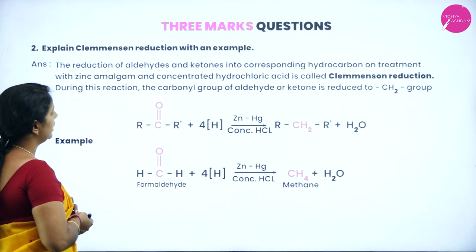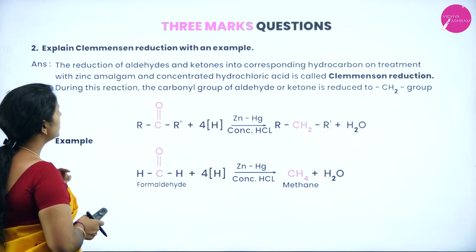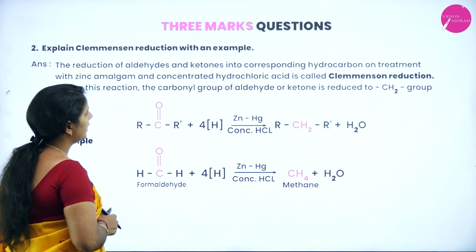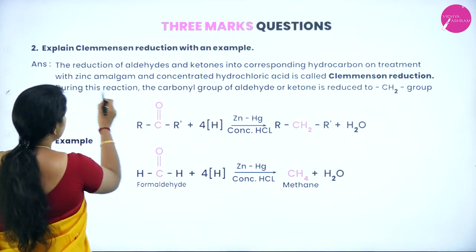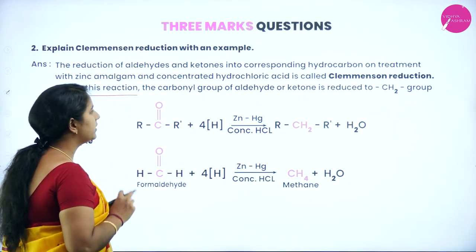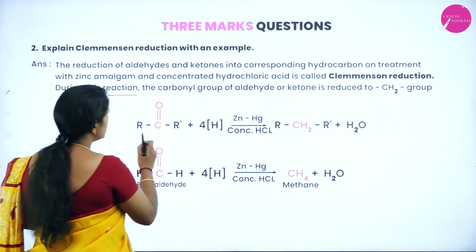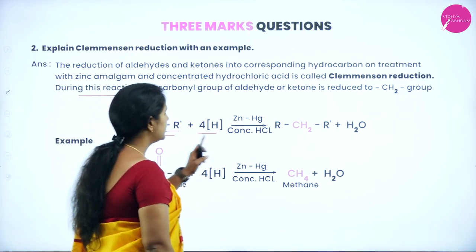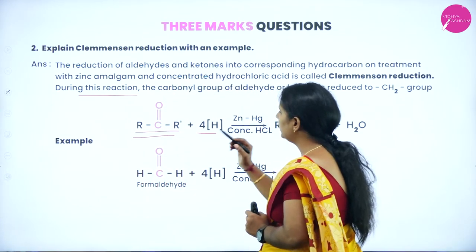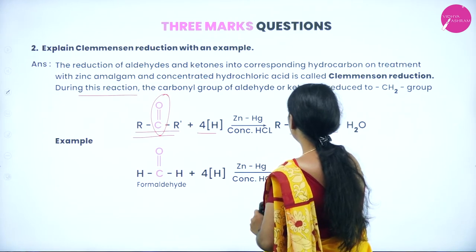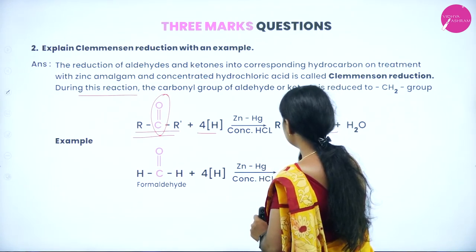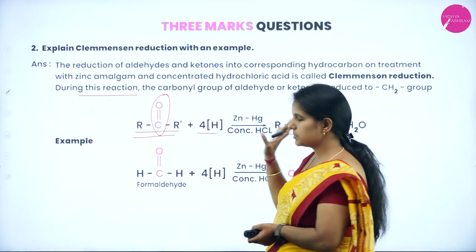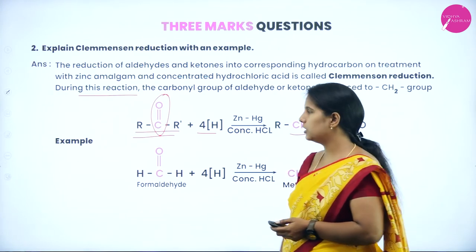What is Clemmensen reduction? The reduction of an aldehyde or ketone to the respective hydrocarbon on treatment with zinc amalgam (Zn + Hg) and concentrated hydrochloric acid is called Clemmensen reduction. During this reaction, the carbonyl group (C=O) of an aldehyde or ketone is reduced to a CH₂ group, thereby forming R–CH₂–R′, a simple alkane hydrocarbon.